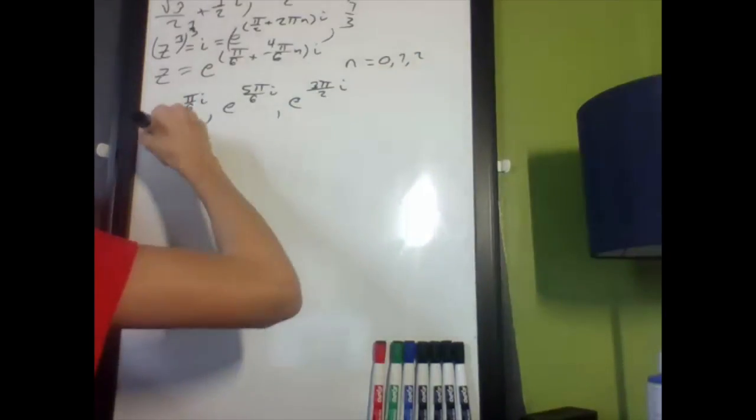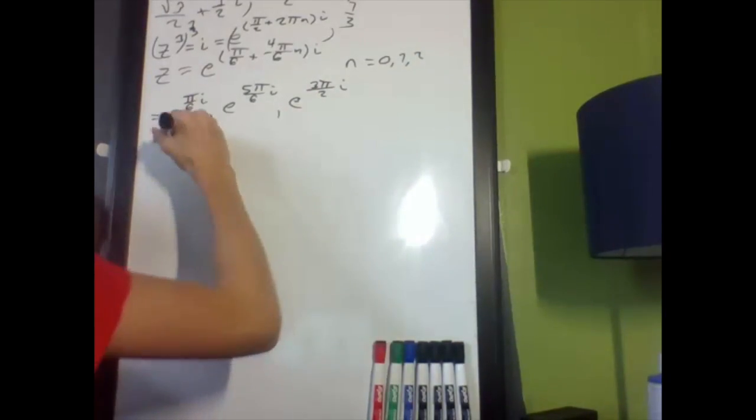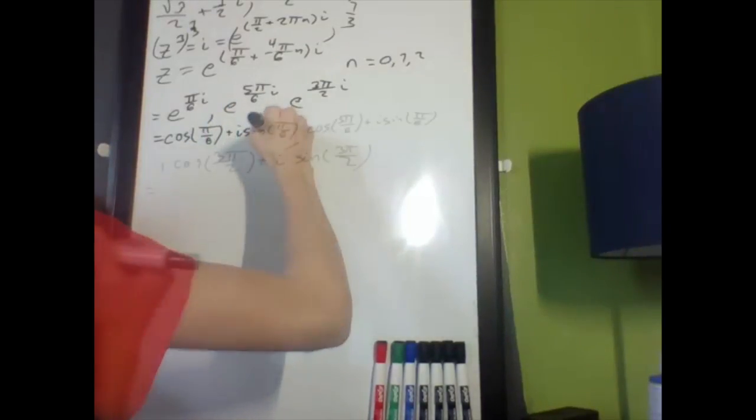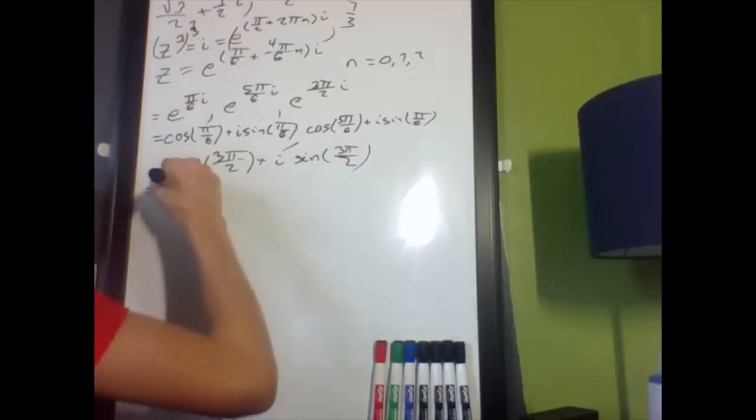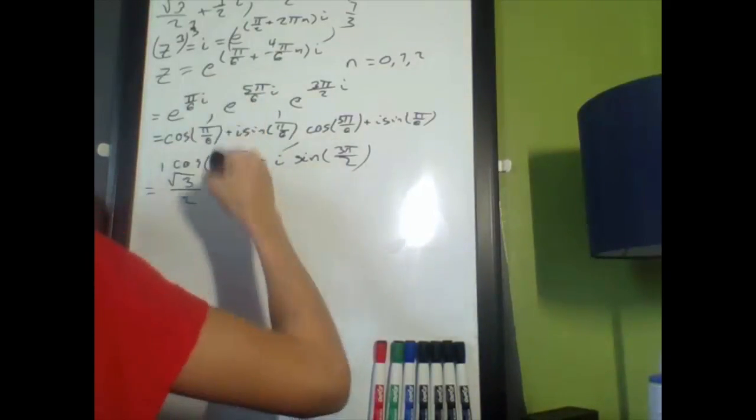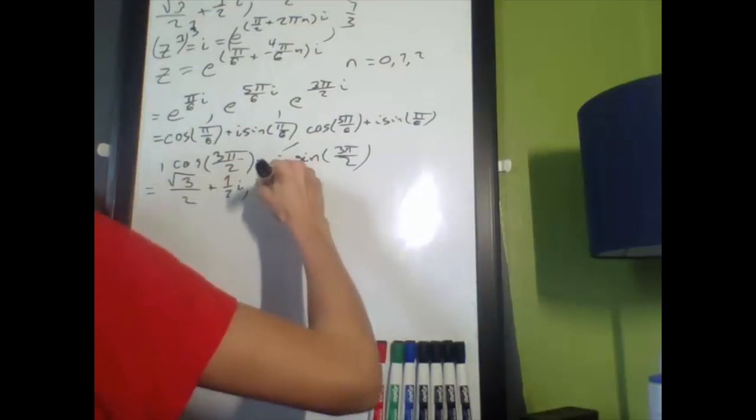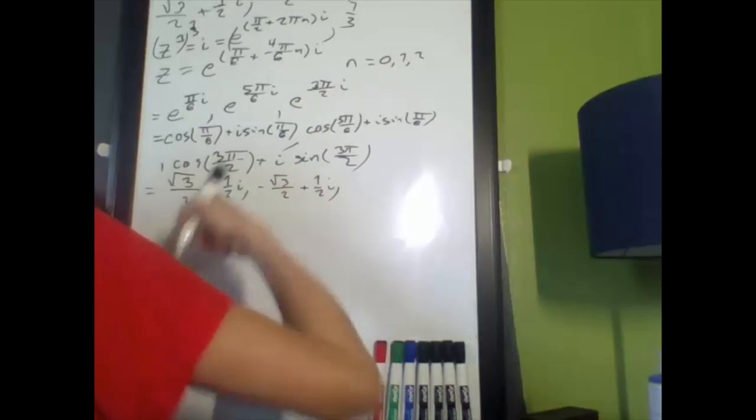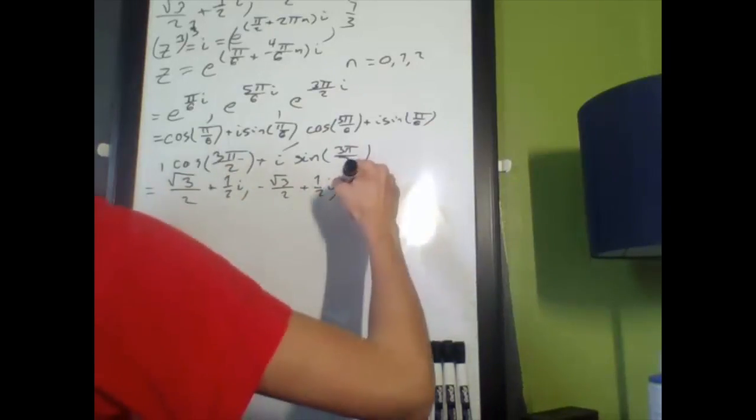Now, if you plug these in, I get cosine of pi over 6 plus i sine of pi over 6. If you haven't already noticed, I get square root of 3 over 2 plus 1 half i, then negative square root of 3 over 2 plus 1 half i. That goes to 0, and then I just get negative i.